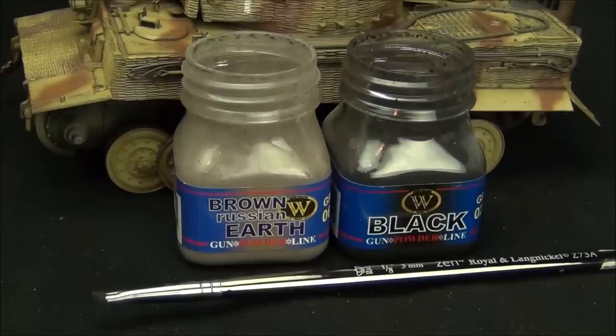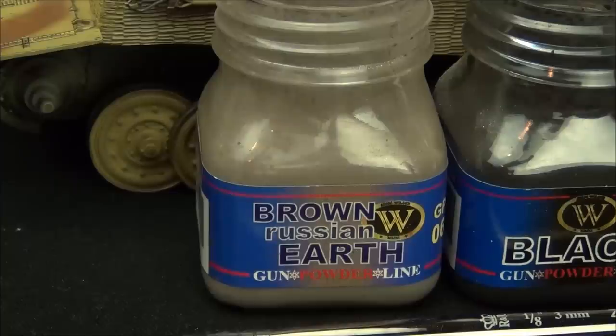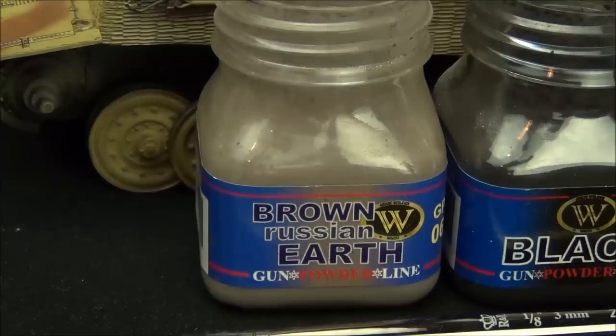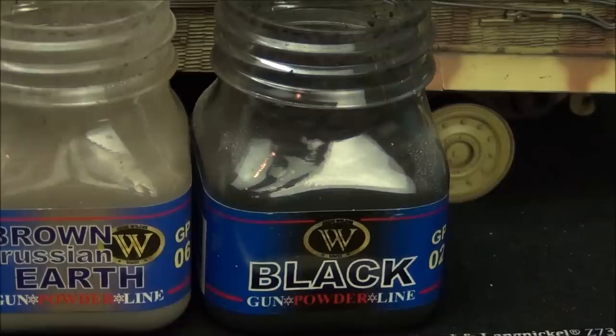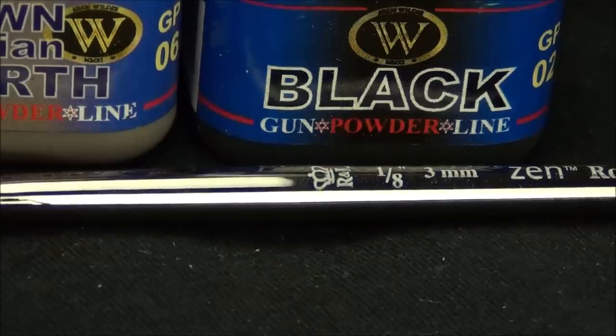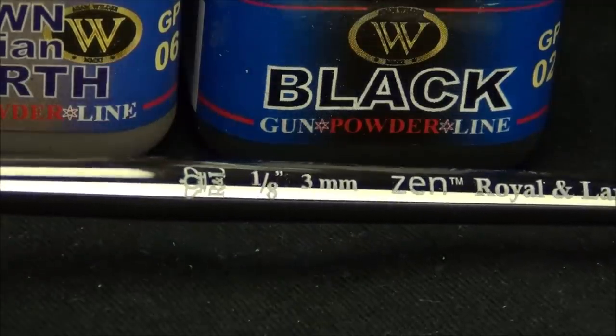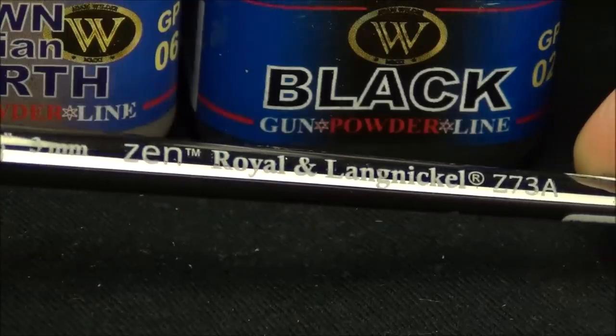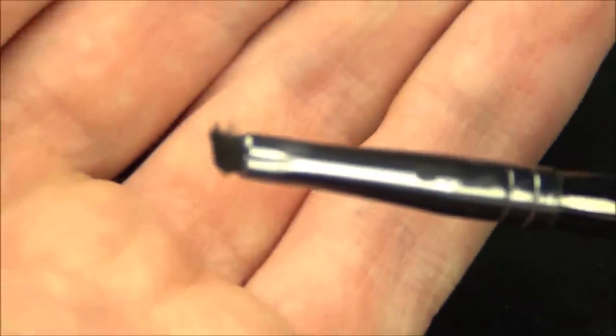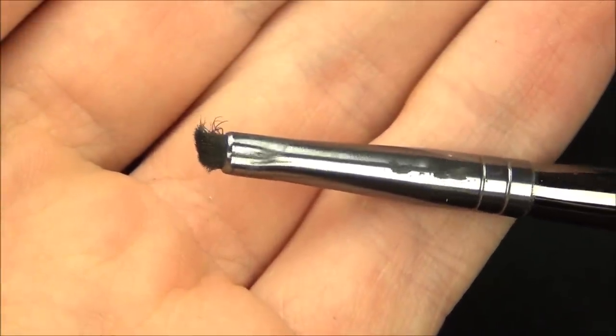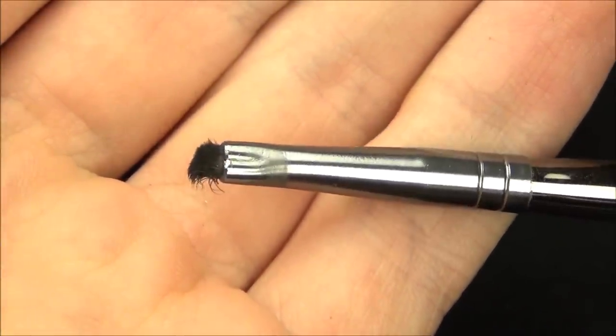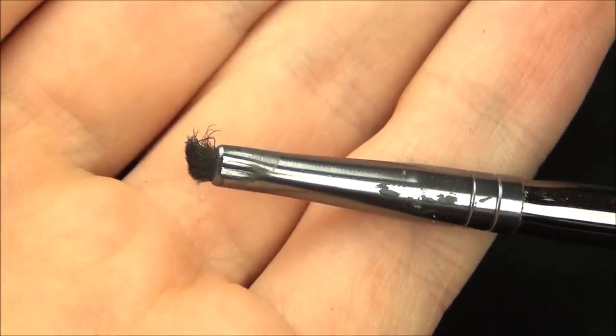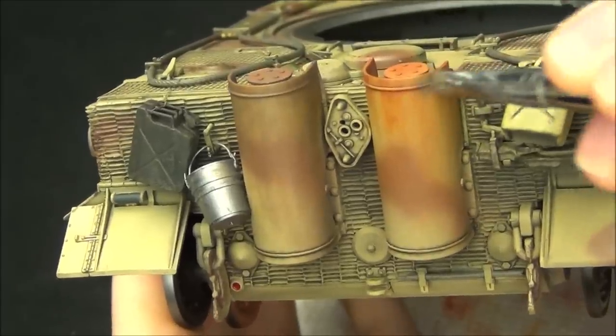I have a couple of Wilder pigments here that I'm going to use next. The colors I've chosen are brown Russian Earth, which is my brownish color to modify the rust effects, and I also have straight up black for the soot effects around the exhaust itself. For the paintbrush I have a 1/8 inch angular shader by the Royal and Langnickel Zen 73 line. Again, people always ask about my brushes. This is just a basic small stiff short-bristled brush, a really good brush for blending pigments.